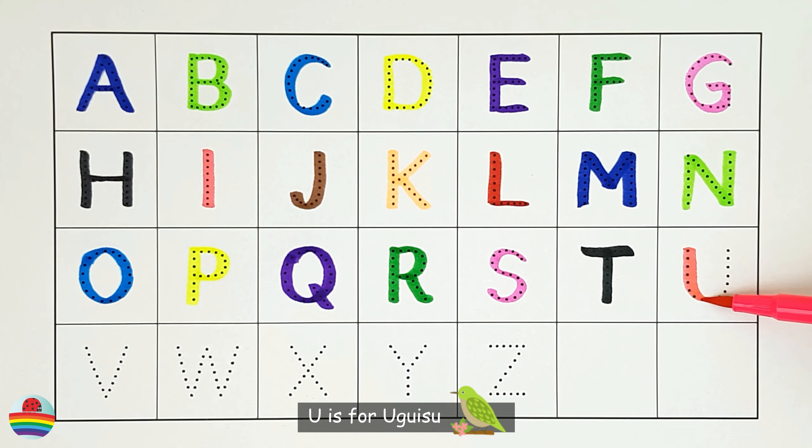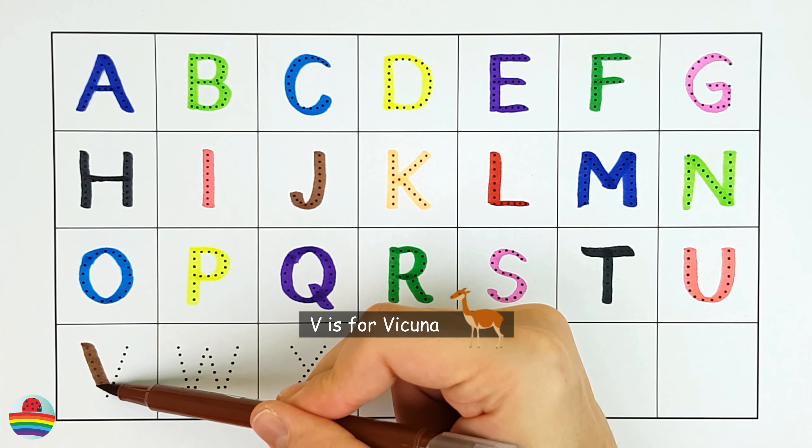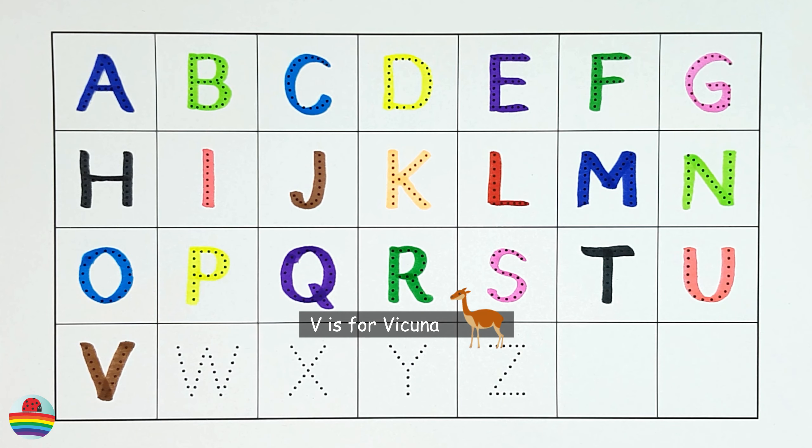U. U is for uguisu. U. V. V is for vicuna. V.